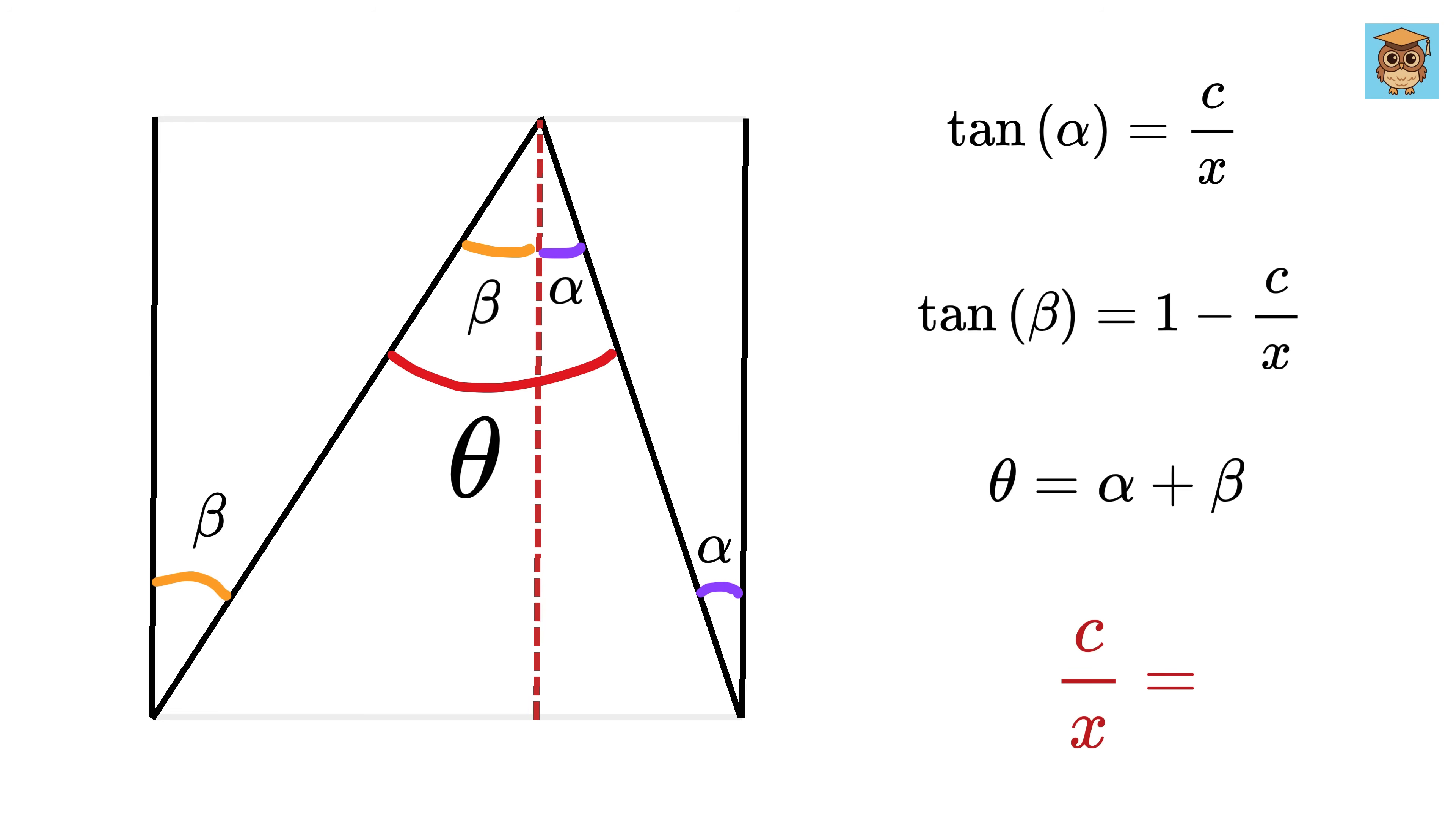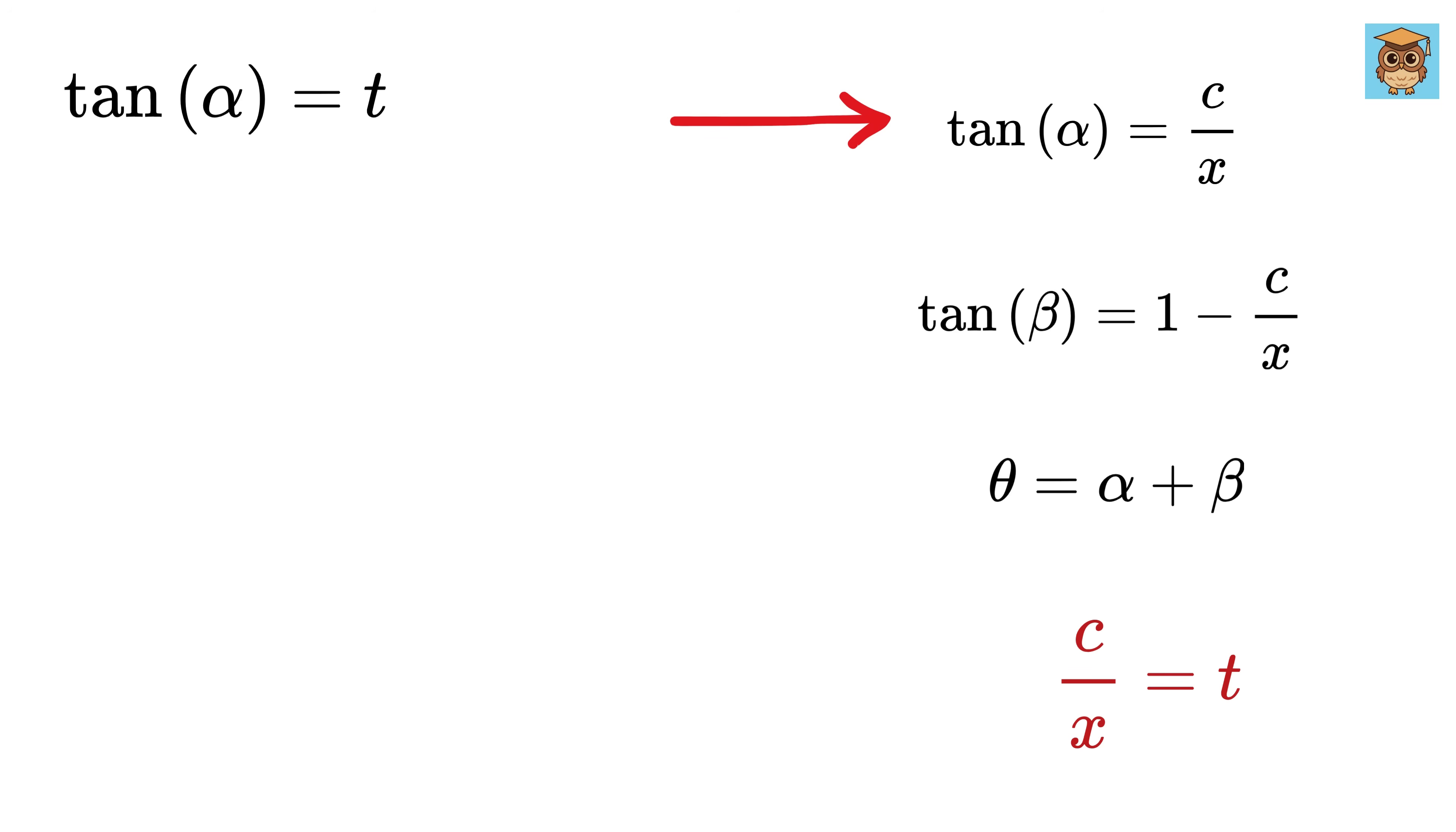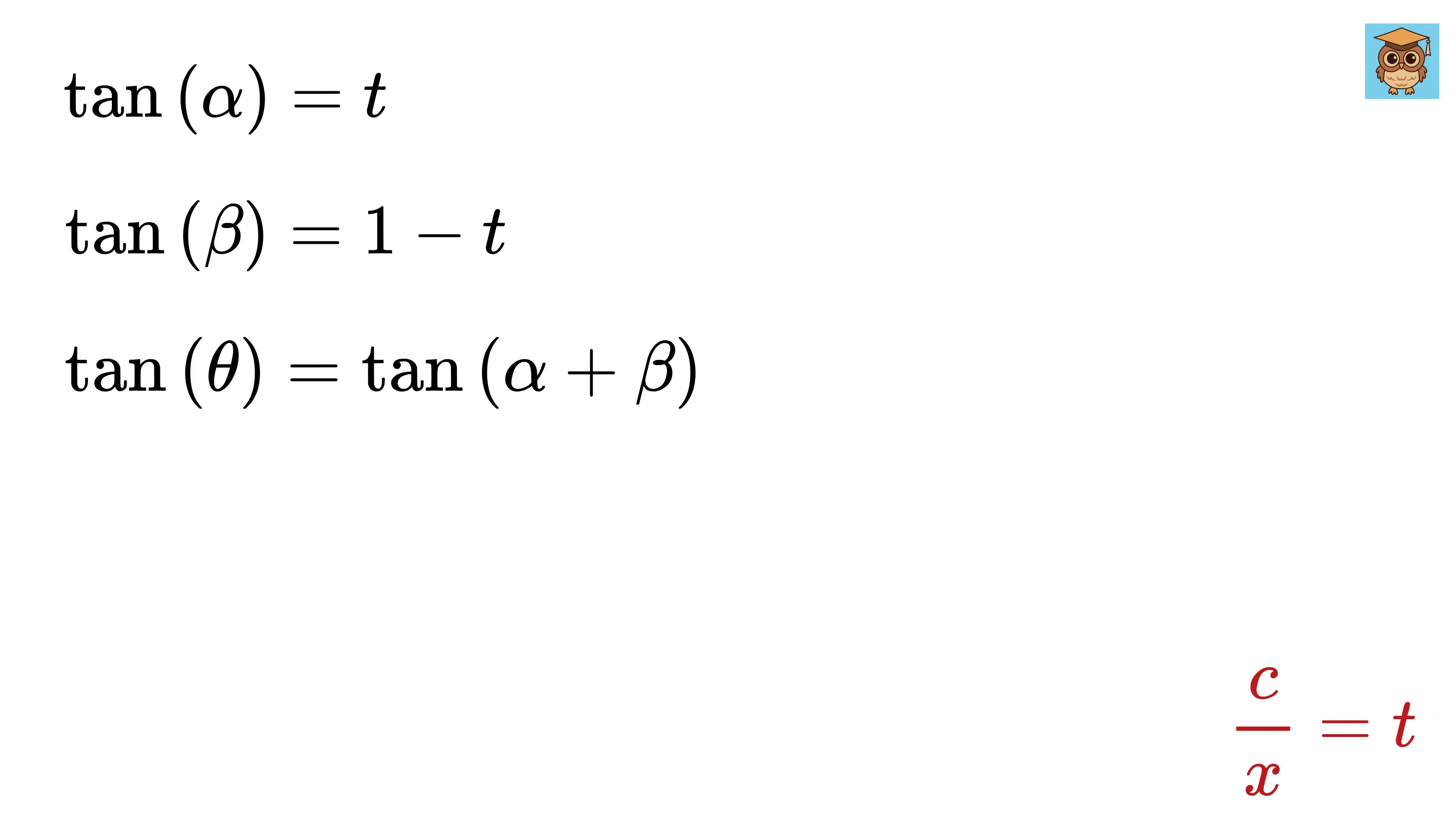Let c over x equal some variable t. Therefore, tan of alpha equals t and tan of beta equals 1 minus t. Now take tan on both sides of this to get tan theta equals tan of alpha plus beta. We can use the formula for tan of alpha plus beta, which is tan of alpha plus tan of beta divided by 1 minus tan of alpha times tan of beta.